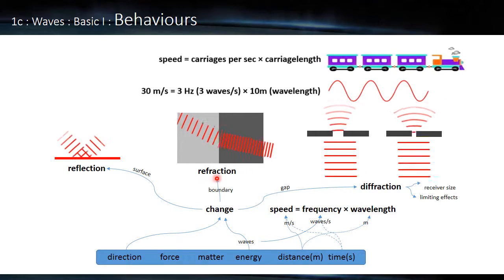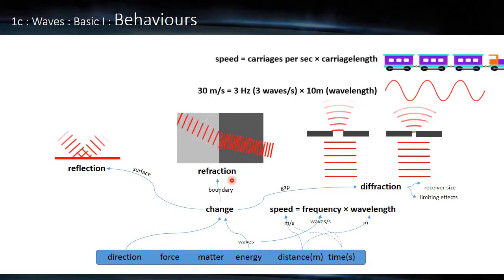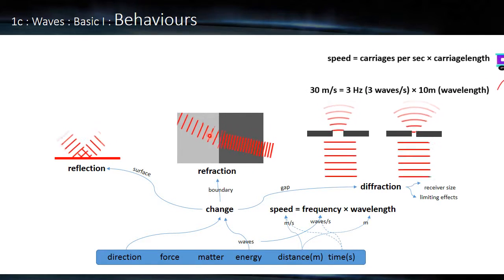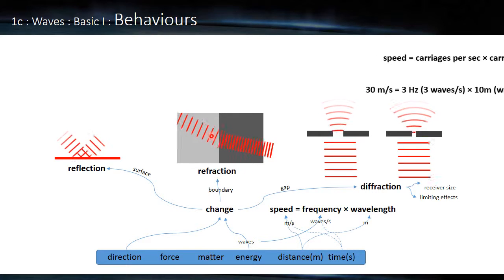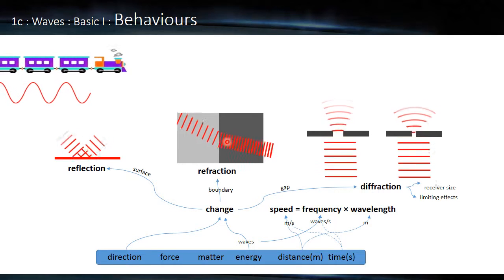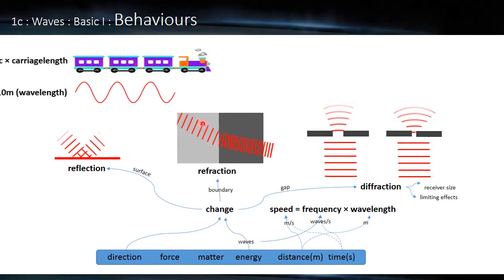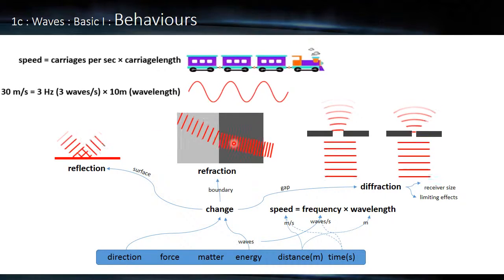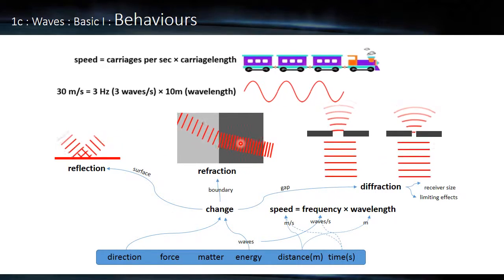Now a very similar sounding word is refraction, but here we're dealing with a boundary. So here we've got light or some kind of wave moving through something like air, something not very dense. We hit something denser like glass, and it slows down. We see that the wave fronts are now closer together, and it's also changed angle. And we think of soldiers marching into a muddy field or something like that, which will explain the change in direction.